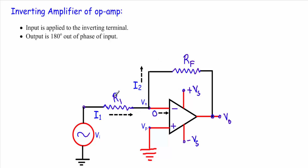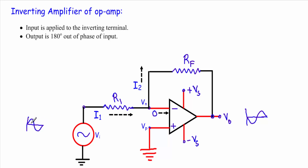We apply the input voltage through a series resistor R1 to the inverting terminal. The output voltage will be 180 degrees out of phase with this input. If I apply a sinusoidal whose positive cycle starts at t=0 at the inverting terminal, I will get an output of the same shape but 180 degrees out of phase — meaning where the input starts its positive half cycle at t=0, the output starts its negative half cycle.